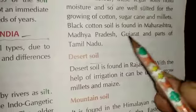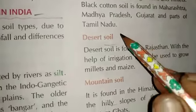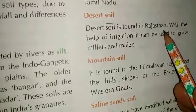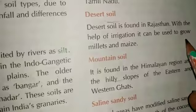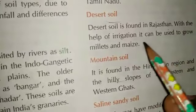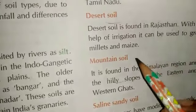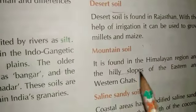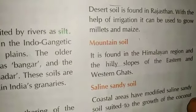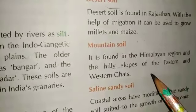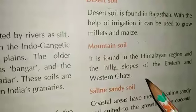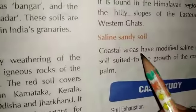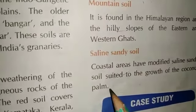Black soil is found in Maharashtra, Madhya Pradesh, Gujarat, and parts of Tamil Nadu. Desert soil is found in arid regions. With the help of irrigation, millet and maize can be grown. Mountain soil is found in the Himalayan region and on hill slopes, eastern and western Ghats. Finally, saline sandy soil is found in coastal areas.